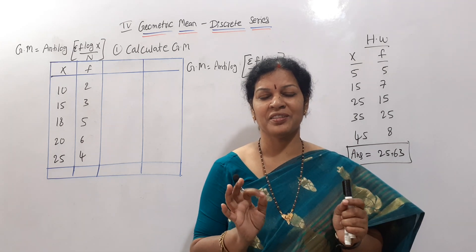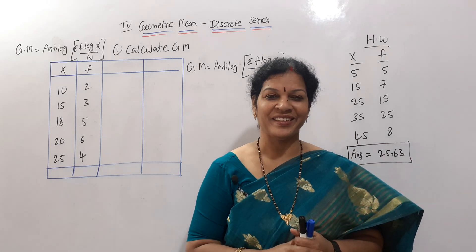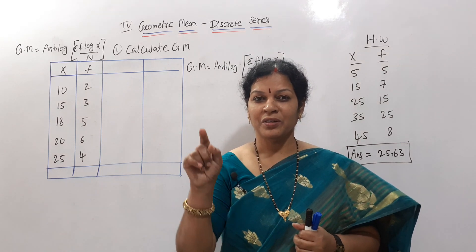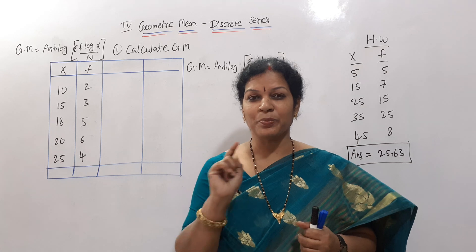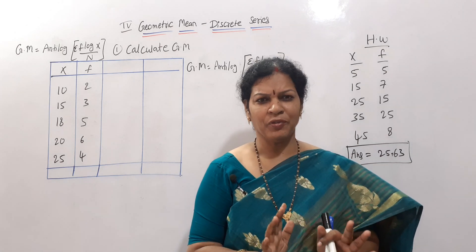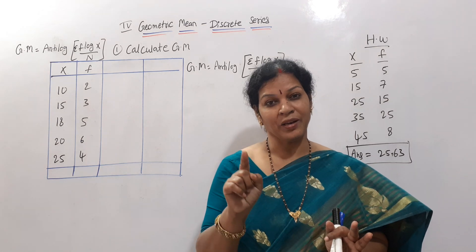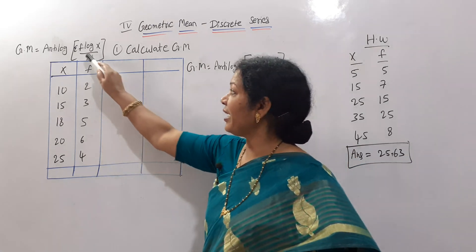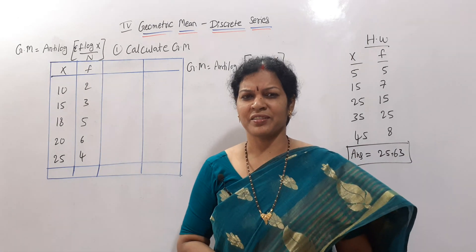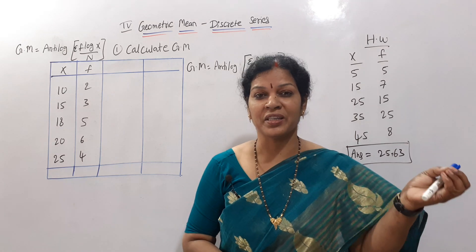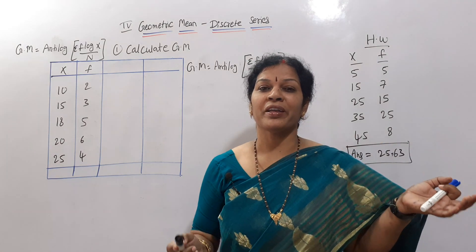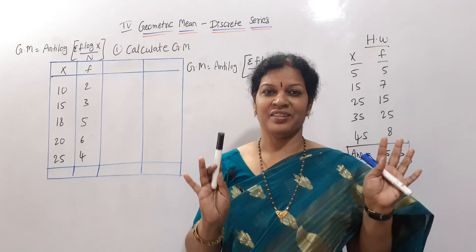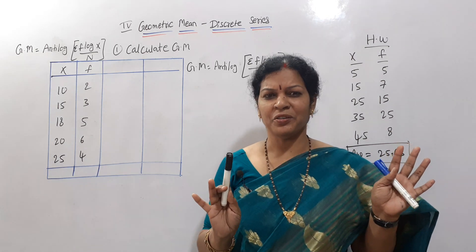Just concentrate for a few minutes and I'll make you understand — it's very easy. The formula for individual series geometric mean was: anti-log of (Σ log x / n). For discrete series, the only difference is that we add frequency: anti-log of (Σ f × log x / n). That's the only change.